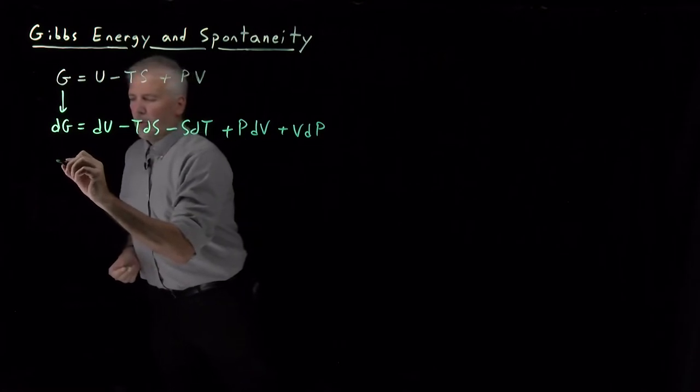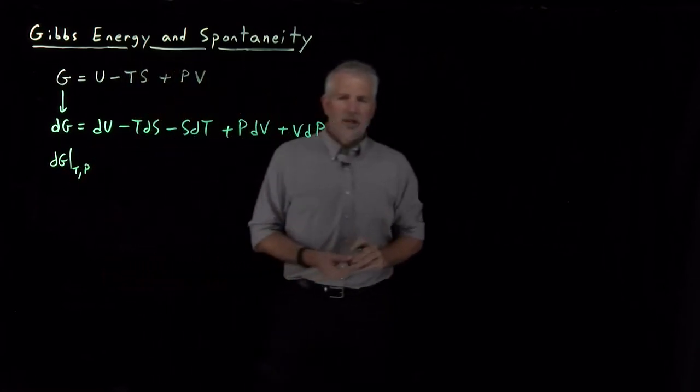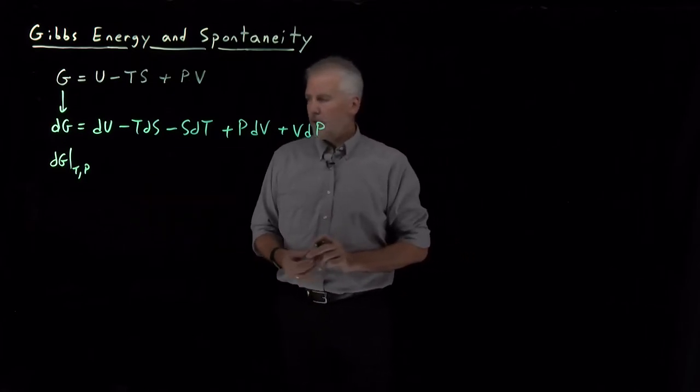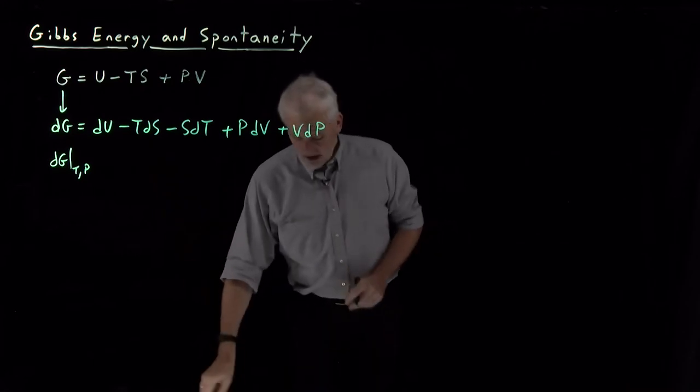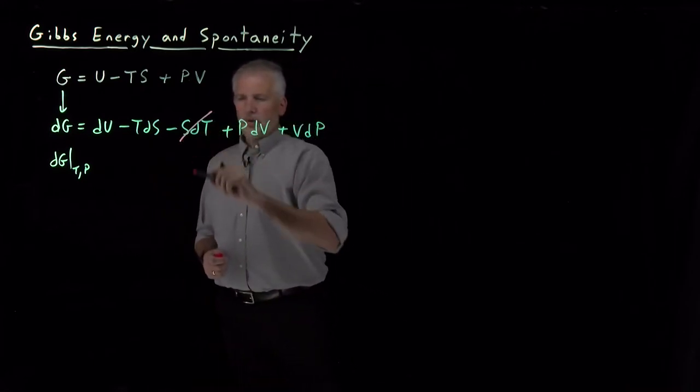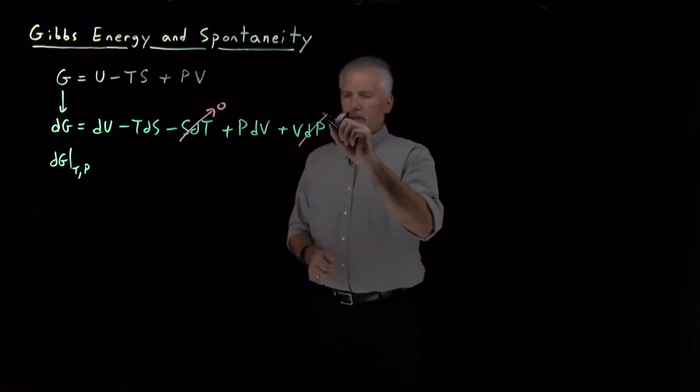I would like to know what is the change in Gibbs free energy if we hold temperature and pressure constant. If we keep temperature constant, then dT equals zero, so this term goes away. And if we keep pressure constant, this term goes away.